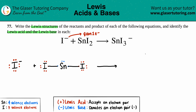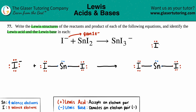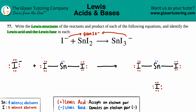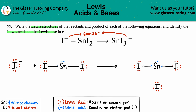Now we make the product SnI₃⁻. I'll copy the SnI₂ structure since tin is already bonded to two iodines, and I just need to add the third iodine from I⁻ — I'll place it on top. That iodine has seven valence electrons — one, two, three, four, five, six, seven — and the negative charge on the compound means it gains one more electron, which I add to the most electronegative element.